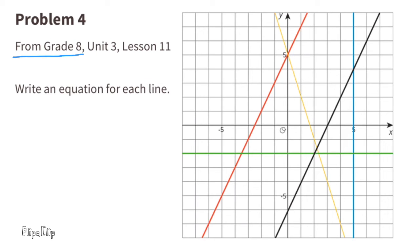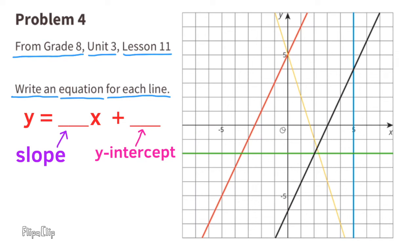Problem number 4 from 8th grade, Unit 3, Lesson 11. Write an equation for each line. We can use this slope-intercept form template. This space represents the slope, and this space represents the y-intercept.